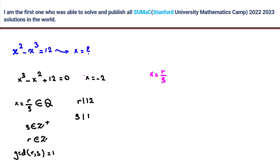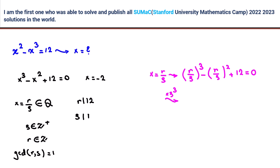Suppose x = r/s is a rational root. Plugging in: (r/s)³ - (r/s)² + (r/s) + 12 = 0. To get rid of the denominators, multiply both sides by s³. Then we get: r³ - r²s + rs² + 12s³ = 0... wait, let me write it: r³ minus r²s, then plus 12s³ equals zero.